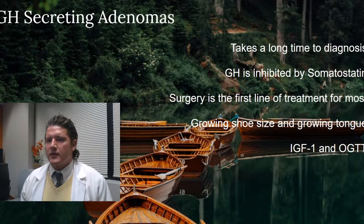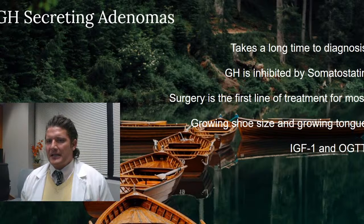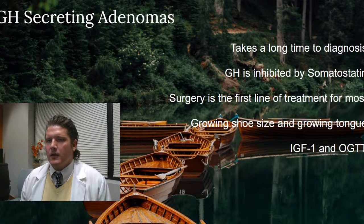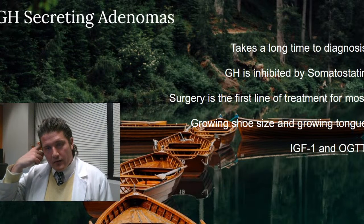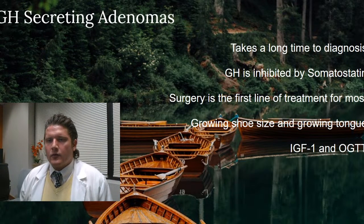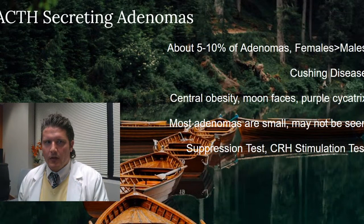Growth hormone is secreted by somatotrophs in the pituitary, and somatotrophs are inhibited by somatostatin. Somatostatin analogs like octreotide are commonly given to individuals with GH-secreting adenomas to help shut off excessive growth hormone production. Surgery is the first-line treatment for most people. The blood tests most commonly run are insulin-like growth factor 1 (IGF-1), which is the gold standard, and an oral glucose tolerance test.